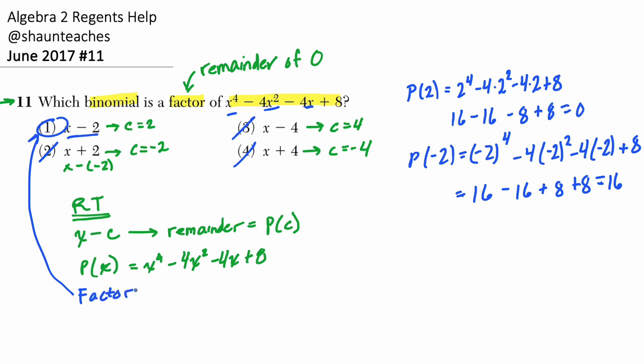And that just says if your remainder is 0, then the thing you're dividing by is a factor. That's based on the remainder theorem, because you have to plug in P of c. So if P of c equals 0, this happens if and only if x minus c is a factor of P, the polynomial.